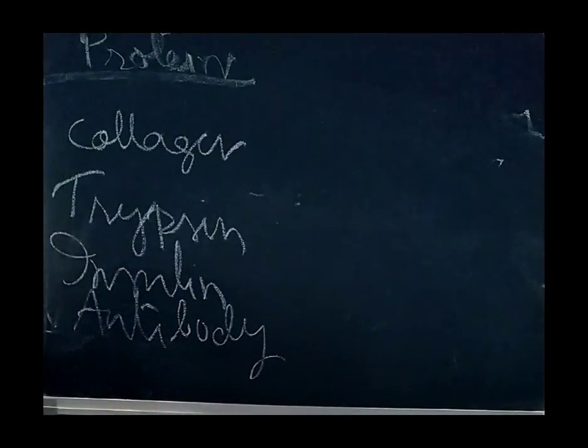So collagen is intercellular ground substance. Trypsin is enzyme. Insulin is hormone. Antibody fights against germs, that is antigen. And there are certain receptors also.